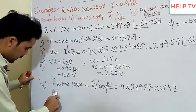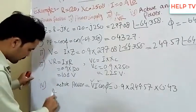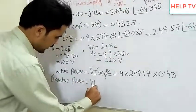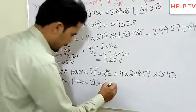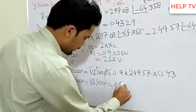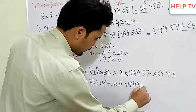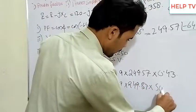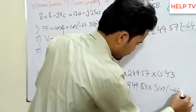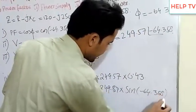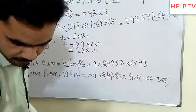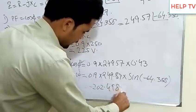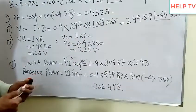Reactive power will be VI sine of phi. Using the same values with sine of minus 64.358, this gives us minus 202.498 for the reactive power.